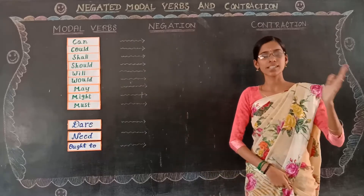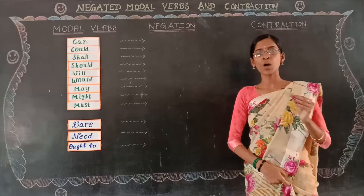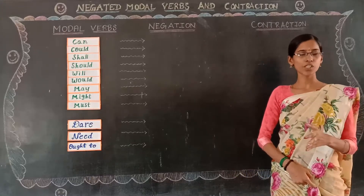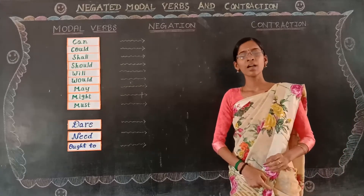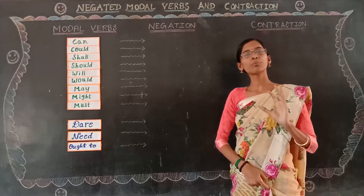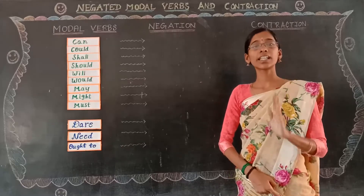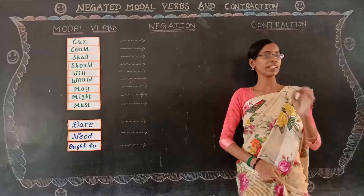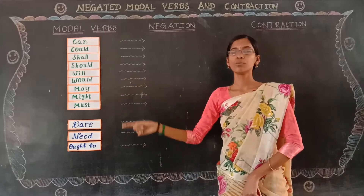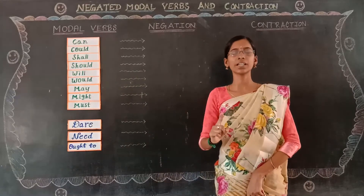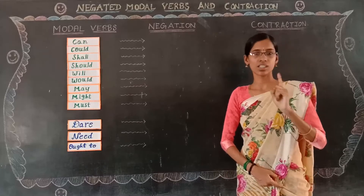In our previous session we learnt what modal verbs are. Modal verbs are a group of auxiliary verbs. There are 13 modal verbs in our English grammar, but according to our syllabus there are only 12 modal verbs. Remember, there are 13 modal verbs in English grammar.